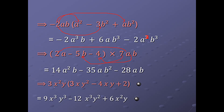Next question: 3x²y multiplied by 3xy² minus 4xy plus 2. Monomial with a trinomial expression. Multiply the monomial with each term: 3x²y times 3xy² gives 3 times 3 equals 9, x² times x equals x³, and y times y² equals y³, giving 9x³y³. Then 3 times negative 4 equals negative 12, x² times x equals x³, y times y equals y², giving negative 12x³y². The last term is an absolute term: 3 times 2 equals 6, giving 6x²y.